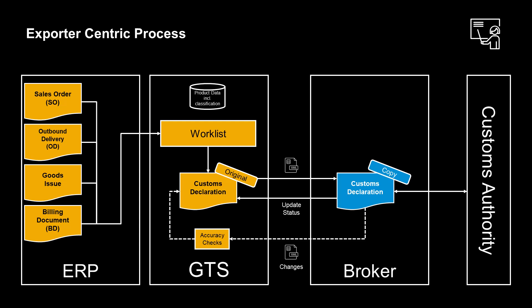If the customs broker aggregates or splits line items, the customs broker's reply to the SAP GTS system, after a completed declaration, must be according to the original structure. We will now look at this in more detail.